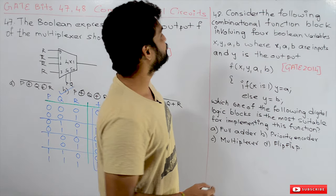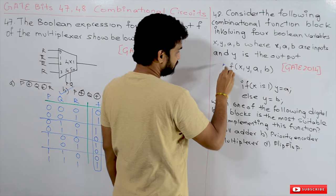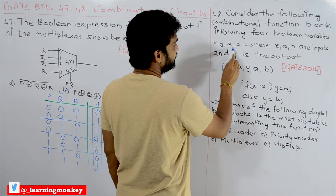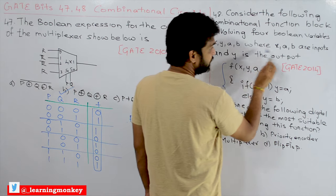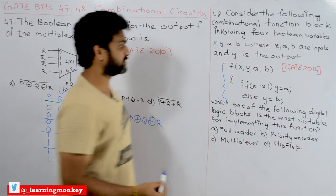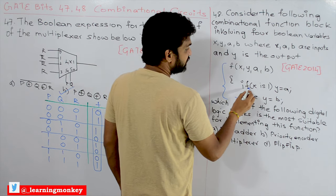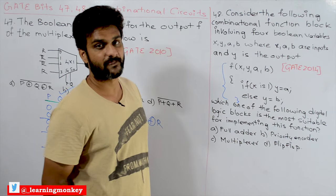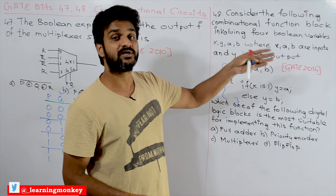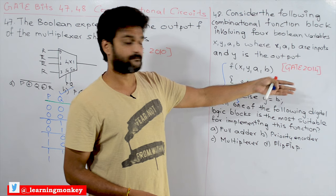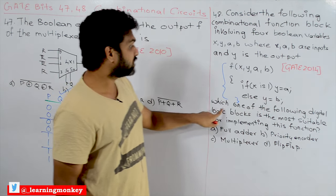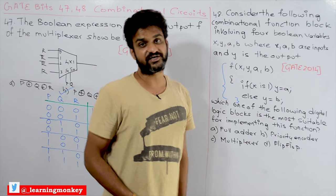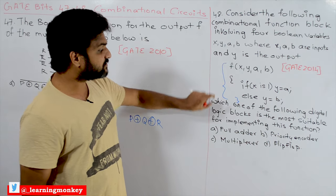Now coming to the next bit, asked in GATE 2014: consider the following combinational function block involving four Boolean variables X, Y, A, B — where X, A, B are inputs and Y is the output. The function states: if X equals 1, then Y equals A; otherwise Y equals B. Which one of the following digital logic blocks is most suitable for implementing this function?